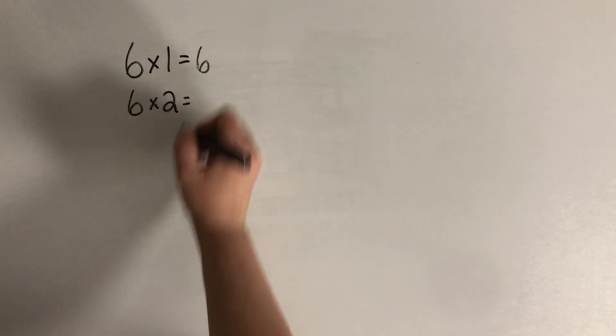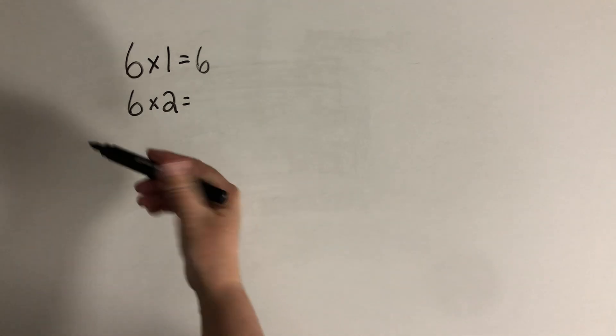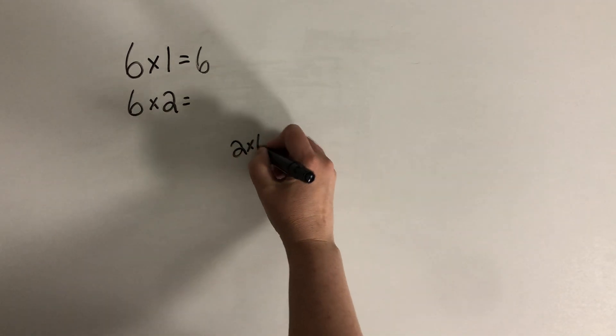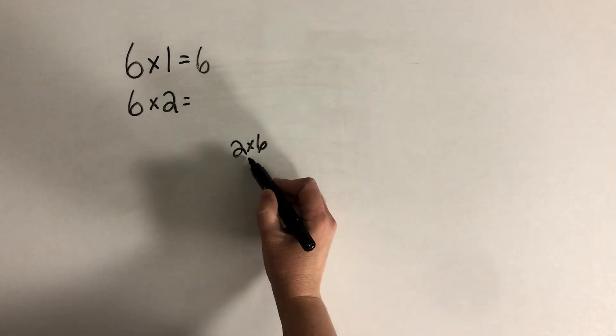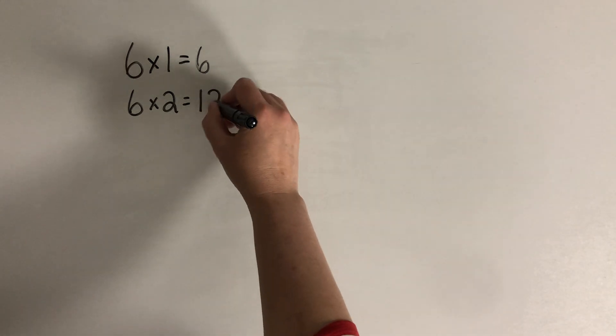For 6 times 2, I'm going to think to myself, I know that I could also write this as 2 times 6, couldn't I? And that helps me think of this as the double of 6. So this is going to be 12.